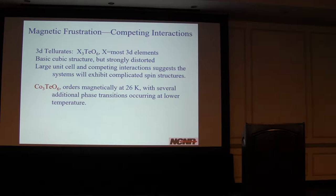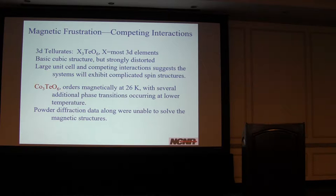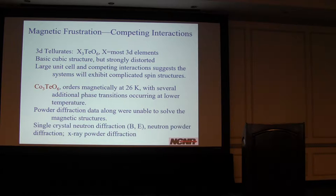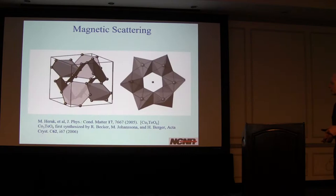The cobalt system orders at 26 Kelvin and then undergoes a number of different additional magnetic and ferroelectric phase transitions, which we'll go through. Early measurements were done on powders, and it turned out you really couldn't solve the magnetic structures using just powder, so we got involved with single crystal neutron measurements, both in zero field and in magnetic and electric fields, and some X-ray powder.